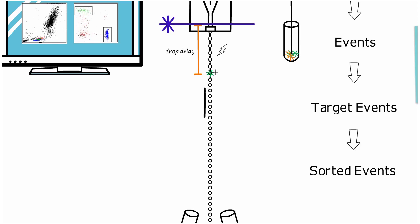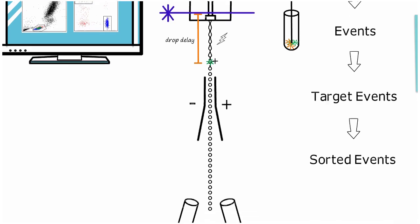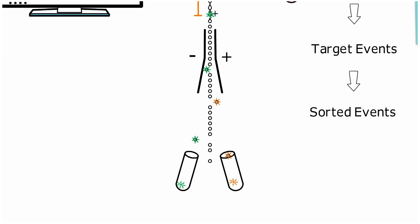The charged droplet then passes between two oppositely charged deflection plates and is directed into the chosen sort collection tube.